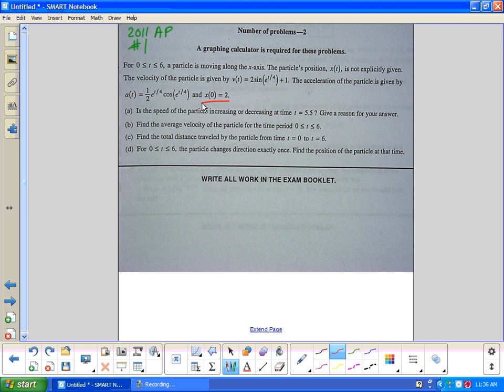I'm thinking fundamental theorem of calculus has got to appear here at some point because they give me an initial condition. Part A, is the speed of the particle increasing or decreasing at time t equals 5.5? Give a reason for your answer. The big thing to catch here is it has to be about speed, not velocity. Understand speed. If you are moving forward and acceleration is positive, you are getting a higher speed. If your velocity is negative and your acceleration is negative, you are getting faster backwards. That is also an increasing speed, like driving your car in reverse.